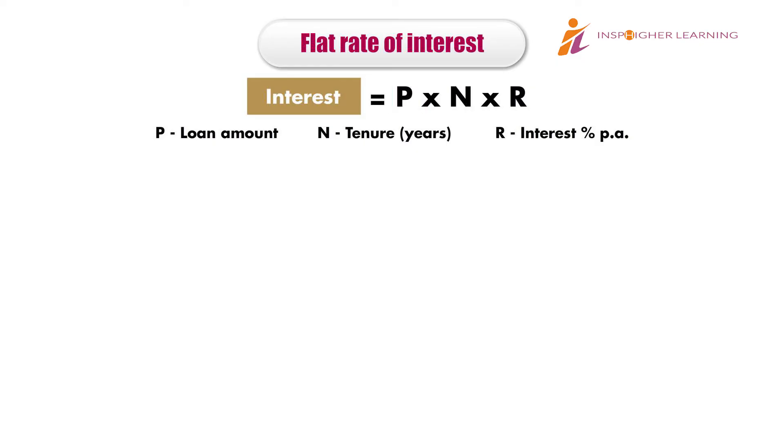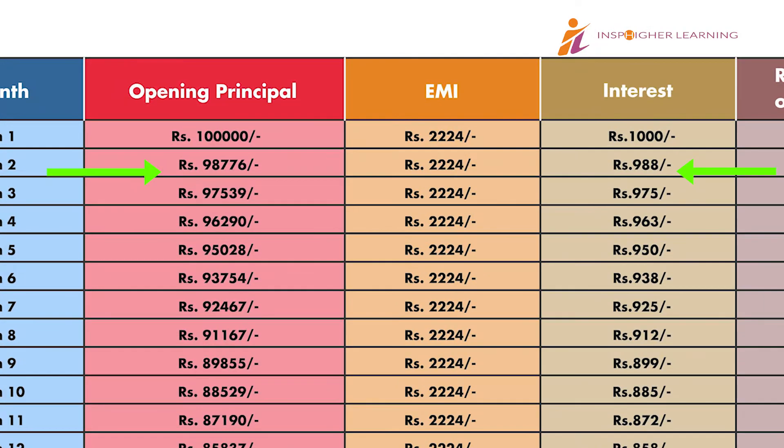If we closely observe the flat rate formula, we notice that interest is applied on the entire loan amount for the entire tenor. But in reality, the borrower does repay a portion of principal each month. In that sense, a flat rate could be somewhat misleading. As seen in an amortization schedule, interest is applied each month on the principal outstanding for that month — this philosophy does not align with the mechanics of a flat rate. Therefore, for making an amortization, a flat rate is always converted into its equivalent reducing rate.